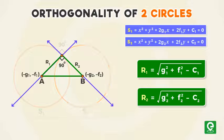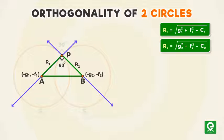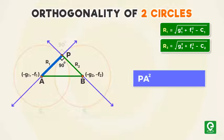Let the two circles intersect each other orthogonally at the point P, so their normals are also orthogonal to each other. From the diagram it is evident that triangle PAB is a right angle triangle. Hence using Pythagoras theorem we have PA² + PB² = AB².